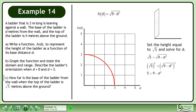This gives us 5 equals 9 minus d squared. Isolate d squared on the left side of the equation. Simplify to get d squared equals 4.